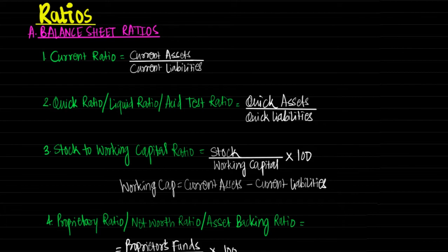The significance of current ratio: it indicates the strength of working capital and major short term solvency of the business. It reflects the ability of the business to pay its short term liabilities. Generally, 2:1 is regarded as the standard ratio, which means current assets must be nearly two times of current liabilities.